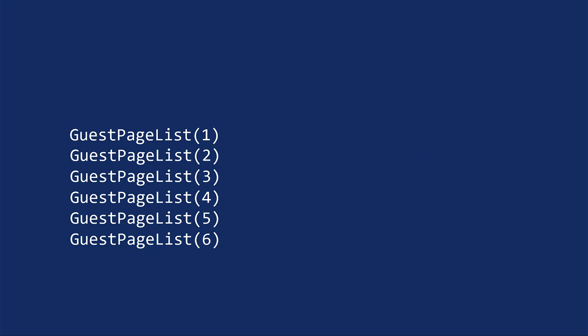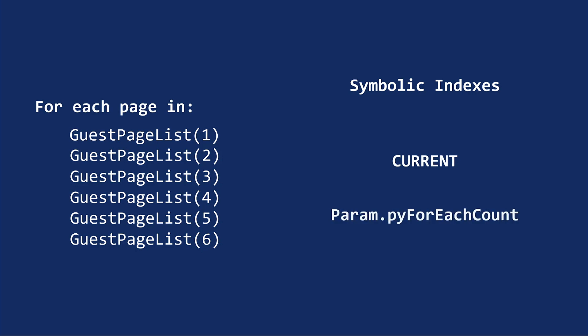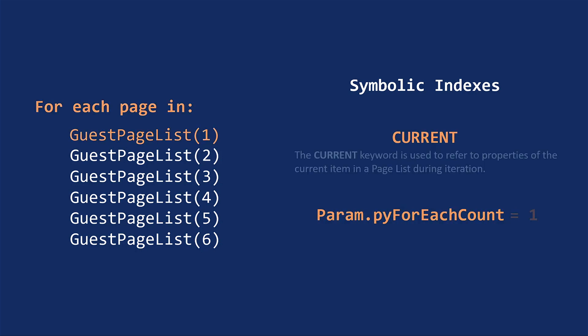If you want to modify the first item, you can use the numeric index 1. Now, in case you are looping through a page list and you want to refer to the current item, you can use the index current. Also, if within a loop you need to get the current index, you can use the property py_for_each_count from the parameter page.